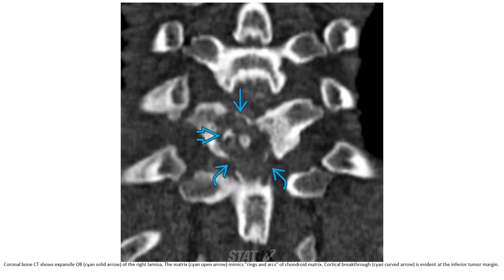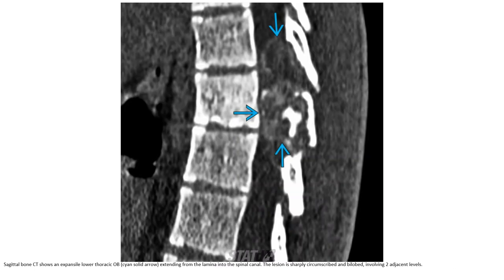Bone CT shows an expansive osteoblastoma arising from the lamina. The matrix mimics a ring or arc pattern. Cortical breakthrough is evident at the inferior tumor margin. Another bone CT case shows an expansive lower thoracic osteoblastoma extending from the lamina into the spinal canal, with the region sharply circumscribed and not involving the adjacent vertebral level.